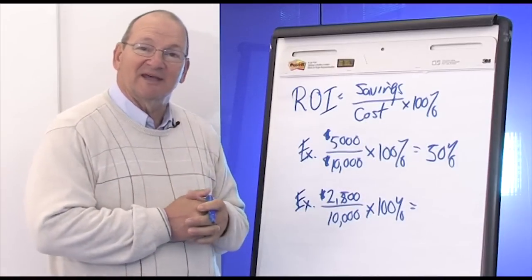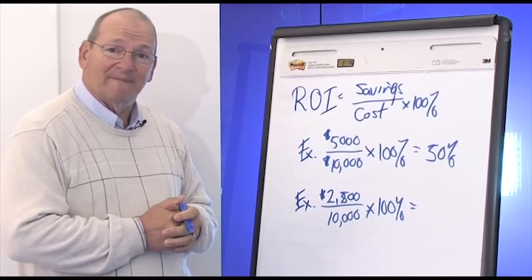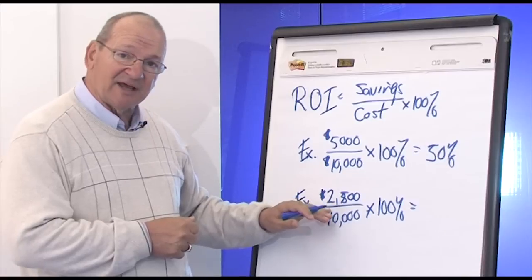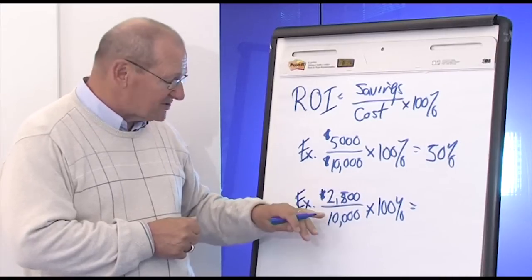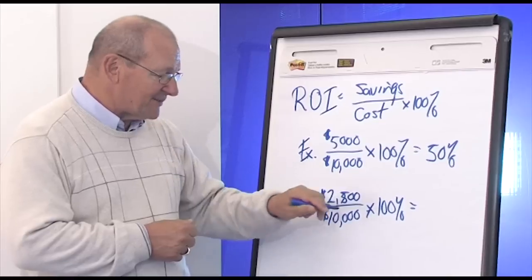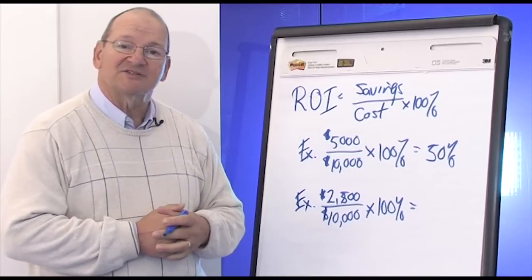Imagine if your 401k was earning at that rate. Now let's take another example. That project that had a $2,500 savings, divide that by a $10,000 cost times 100%. What is the ROI?